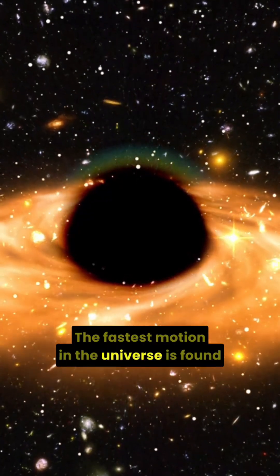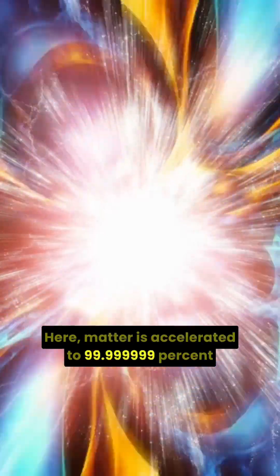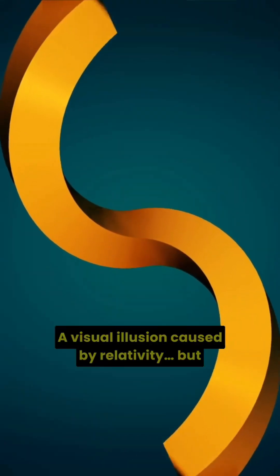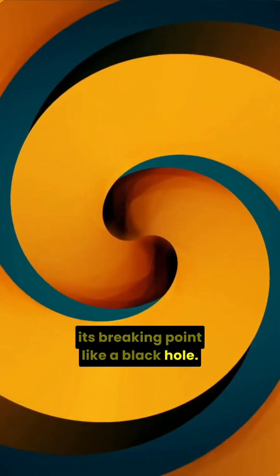The fastest motion in the universe is found in the jets of a supermassive black hole. Here, matter is accelerated to 99% the speed of light, so fast it appears to move faster than light itself. A visual illusion caused by relativity, but a reminder that nothing pushes physics to its breaking point like a black hole.